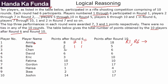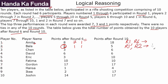Bala has a score of 2 after 6 rounds. Bala participated in round 1 and round 2, but from rounds 3 to 6 Bala was not allowed to participate. So the score of 2 must have come from round 1 and round 2, meaning Bala scored 1 and 1 in both. If Bala scored 1 in round 1, then Amita cannot score 1 in round 1 — so Amita must have scored 7 in round 1 and 1 in round 6.